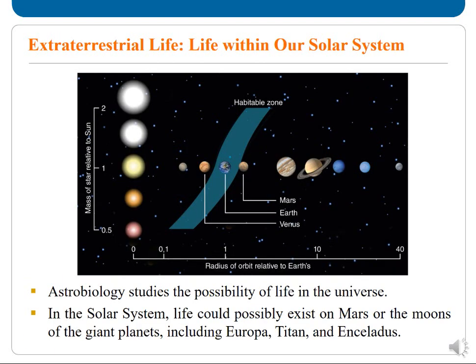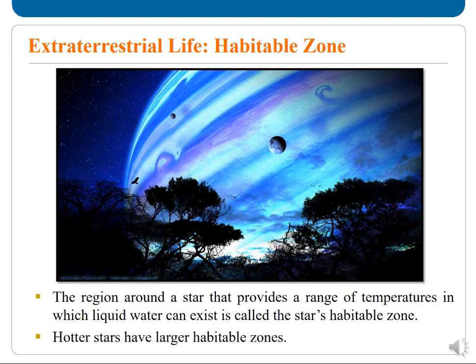Astrobiology studies the possibility of life in the universe. In the solar system, life could possibly exist on Mars or on moons of giant planets, including Europa, Titan, and Enceladus. The region around a star that provides a range of temperatures in which liquid water can exist is called the star's habitable zone.